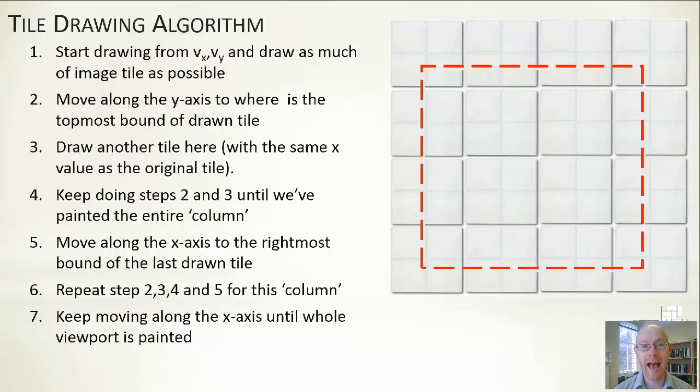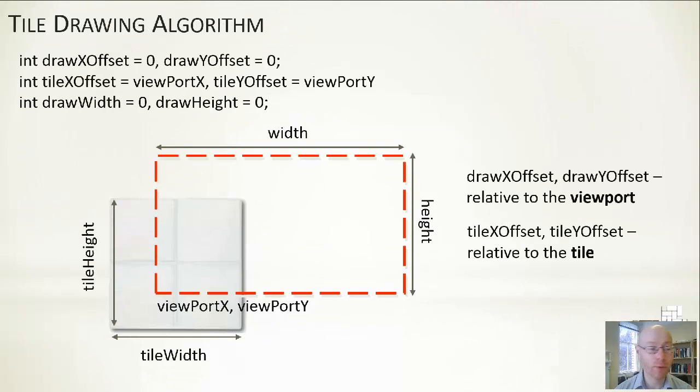If we wanted to look at an implementation, there's a few variables we're assuming here. We've got drawXOffset and drawYOffset, which are relative to the viewport. They control the position that we are drawing to on the viewport, the on-screen location. And initially is 0, 0. We're assuming we're populating our viewport from the bottom left-hand corner.